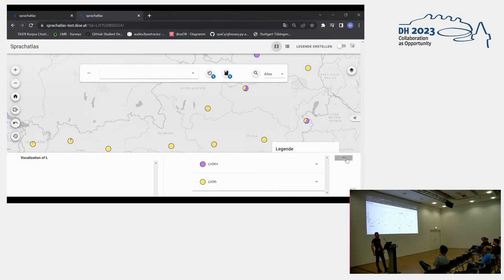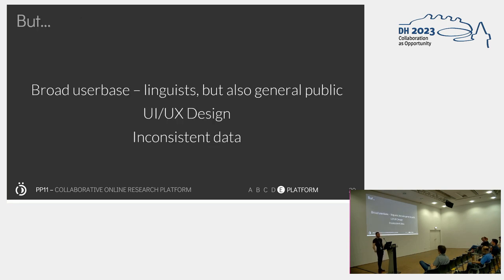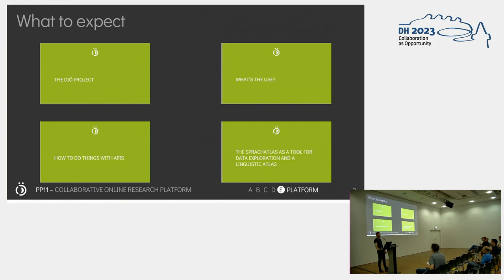Some of the benefits of our approach: we have shown that the API can obviously be a useful tool to map our research data. One approach fits all — one tool for data exploration and also data presentation. Because we query the entire database, we show how our research can be made reproducible, as all the analysis can be reproduced in this tool. Obviously there are also some problems: because it wants to do so much, there's a broad user base — linguists, but also anyone who's interested — and that has consequences on the UI and UX design, which we're still working on. We're also still working on getting our data more consistent, but we have a little time because it will be coming at the beginning of 2024. I hope to see all of you in the DUE Sprachatlas — probably under a different name though. Thank you very much for your attention.